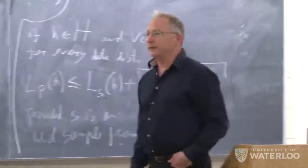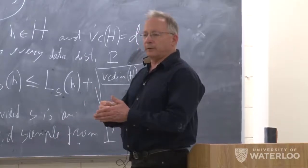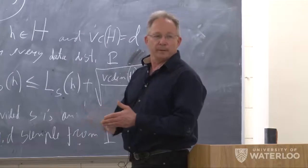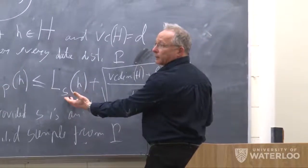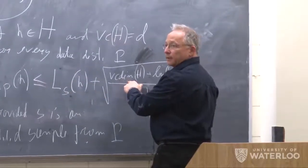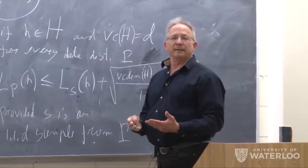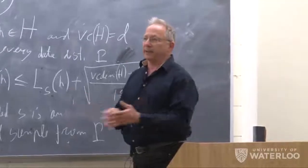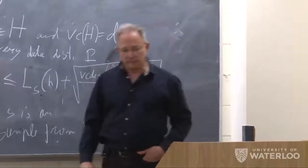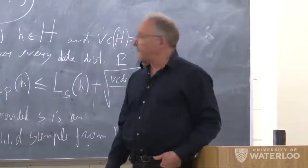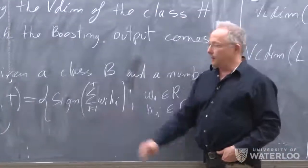To summarize where we are: we described the AdaBoost paradigm and are considering what we gain or lose by making more steps. More steps decrease the empirical error but increase the VC dimension, which controls generalization. The more complex H is, the more risk of overfitting — even though the hypothesis looks good on the sample, it may be bad in reality — and this overfitting is controlled by the VC dimension.